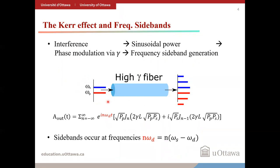If two frequencies of light are launched into an optical fiber, their interference leads to a sinusoidally varying optical power. Due to the non-linearity parameter gamma, this leads to a sinusoidal modulation of the refractive index, which creates frequency sidebands. These sidebands are located at integer multiples of the input frequency difference. Therefore, increasing the input frequency difference causes higher-order sidebands to undergo greater frequency shifts.